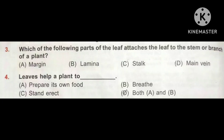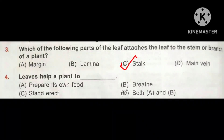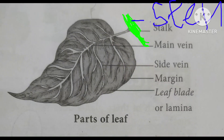Question number 3. Which of the following parts of the leaf attaches the leaf to the stem or branch of a plant? Option A: Margin. Option B: Lamina. Option C: Stalk. Option D: Main vein. The correct option is Stalk, Option C. The stalk is attached to the stem.